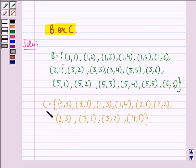Since event C was getting the sum of the numbers on the die less than or equal to 5, we see that here if we add these two, we always get a number that is less than or equal to 5.